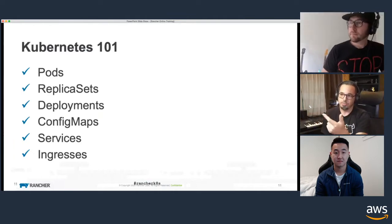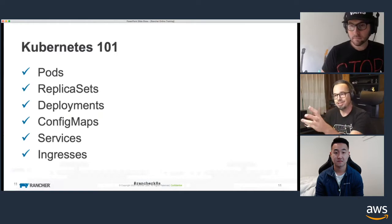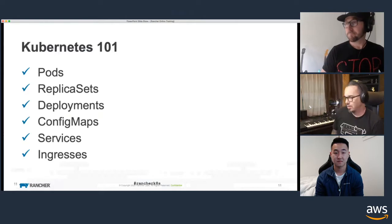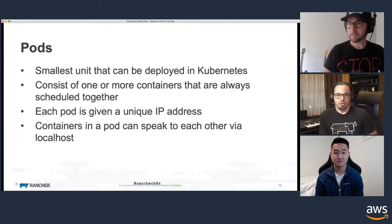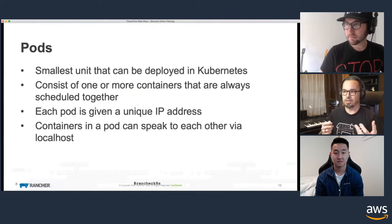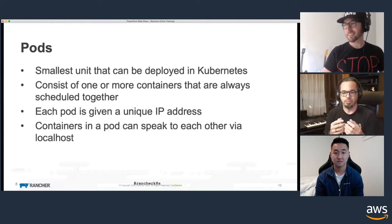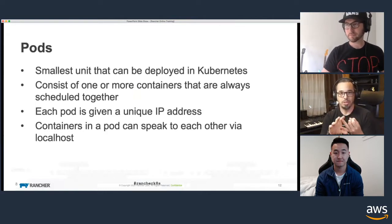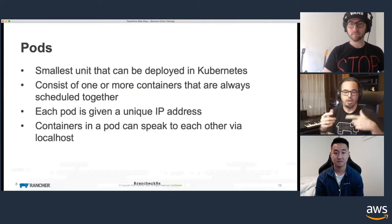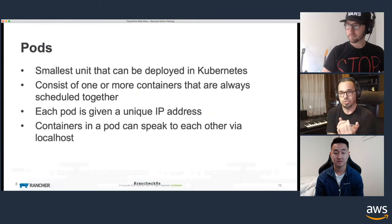Pods, replica sets, deployments, config maps, services, and ingresses are the basic building blocks you need to actually do things. Pods are the smallest unit that can be deployed in Kubernetes — they usually consist of a container. If you've ever deployed anything as Docker containers, you know the issues when linking containers together across hosts. Pods solve that by running multiple containers in a shared space, giving them access to the same storage volume and the same network space.